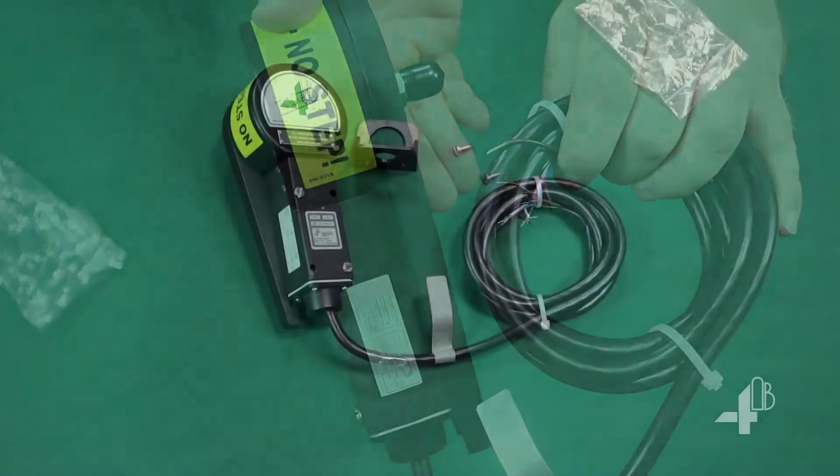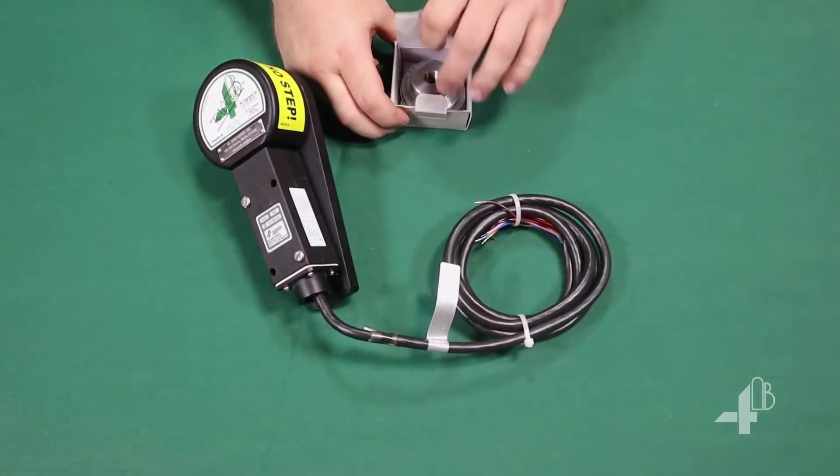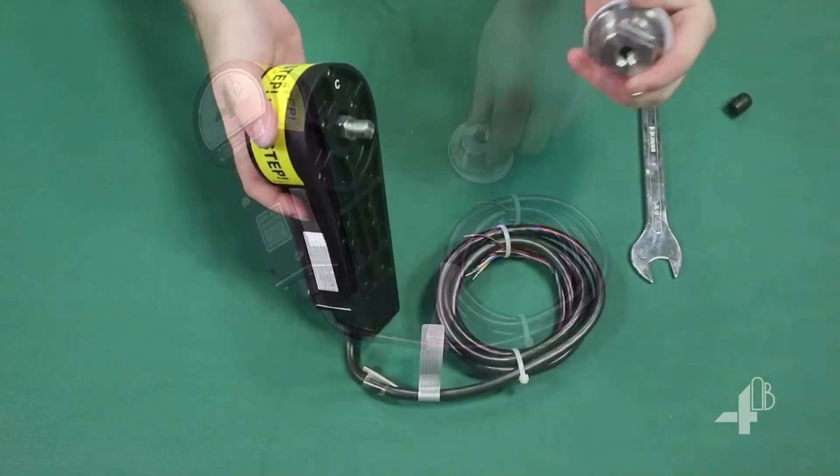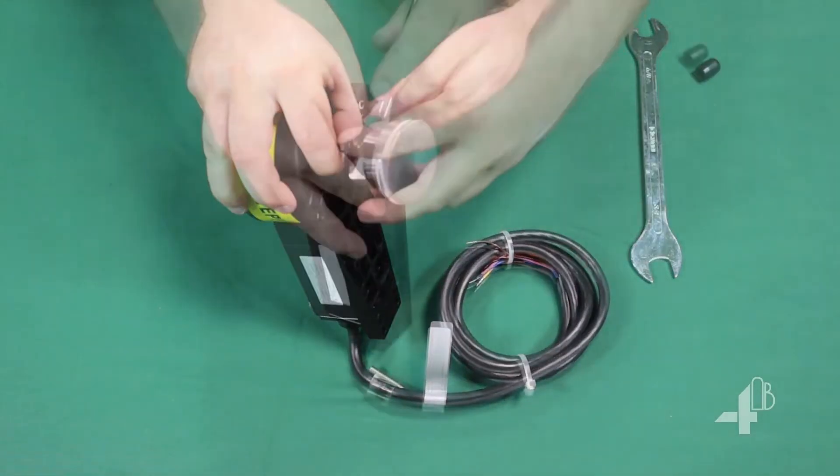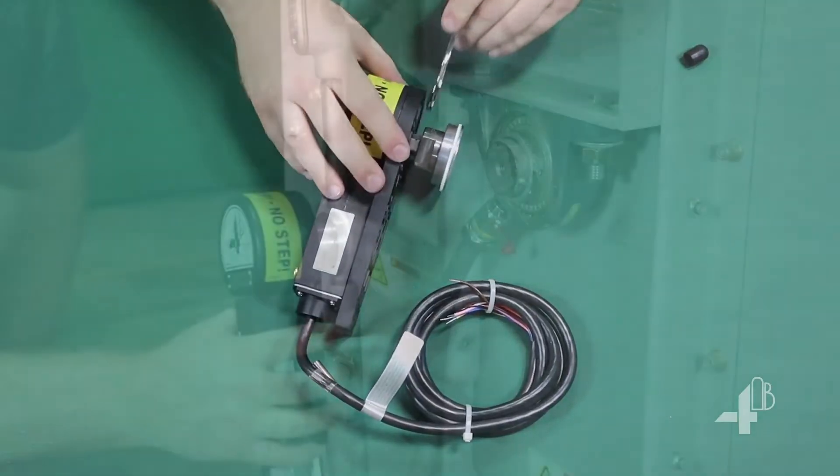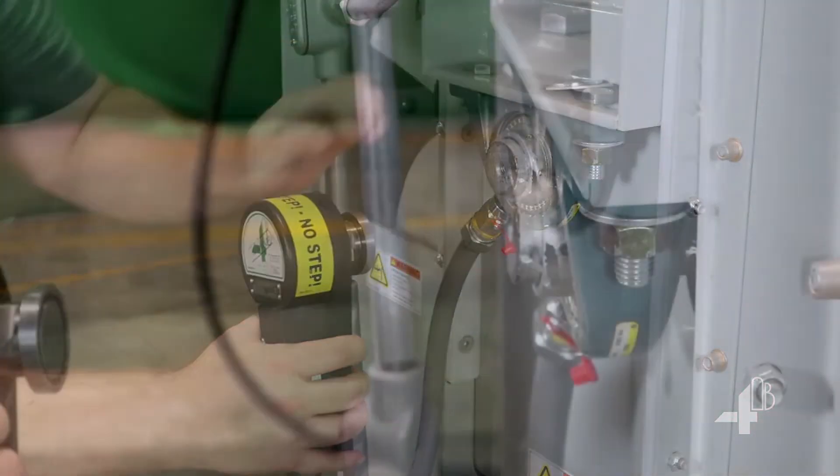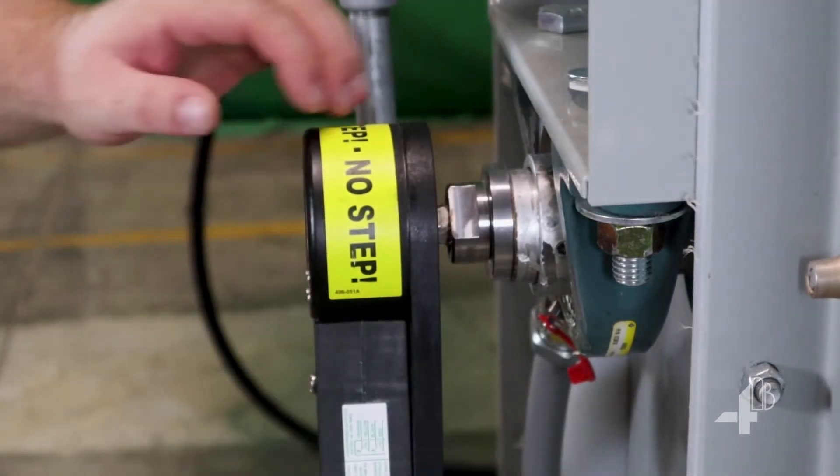If required, the flexible strap can be attached to the machine. We suggest using the MagCon for easier installation of the Whirligig. Instead of drilling and tapping the shaft for half-inch UNC 13 thread, simply screw the MagCon onto the Whirligig and snap it onto the shaft. Watch your fingers. This magnet is really strong.